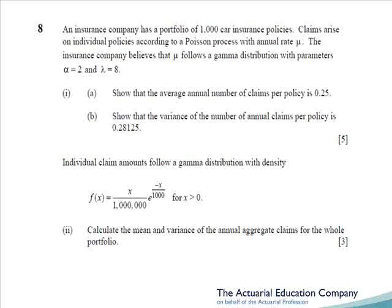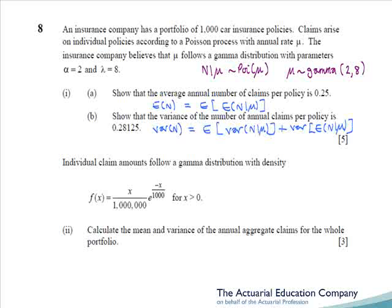Question 8 involves claims on a portfolio of insurance policies. Claims arise according to a Poisson process with rate mu, but mu follows a gamma distribution. We're asked to obtain the average and variance in the number of annual claims per policy — actually extremely similar to April 2002 question 7. Using n to denote the number of claims, n given mu is Poisson(mu), where mu has a gamma distribution with parameters 2 and 8. To obtain E[n], we use the formula from page 16 of the tables: E[n] equals the expectation of the expectation of n given mu. Similarly, the variance of n equals the expectation of the conditional variance plus the variance of the conditional expectation.